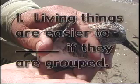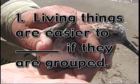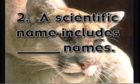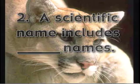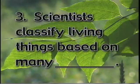Fill in the correct word to complete the sentence. Number 1: Living things are easier to _____ if they're grouped. Number 2: A scientific name includes _____ names. Number 3: Scientists classify living things based on many _____.